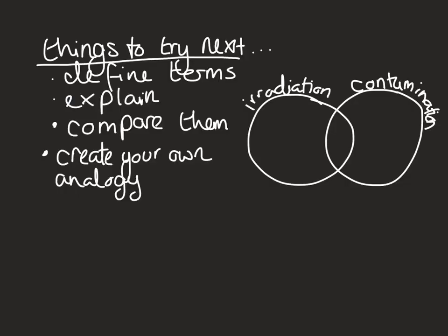Things for you to try next: make sure you can define the terms irradiation and contamination. Try and explain them to somebody. You can compare them — you could use a Venn diagram with things they've got in common in the middle and differences on either side. Think about the hazards and the type of radiation they give out. Then see if you can create your own analogy — it could be loads better than my glitter analogy. I hope you're all well. Look after yourself and I will see you soon.